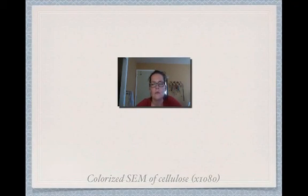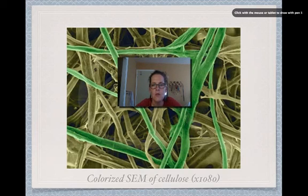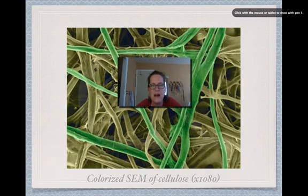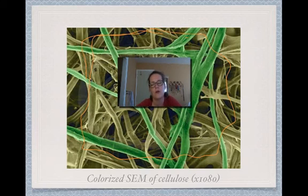This is a colorized SEM — a scanning electron micrograph. This is actually cellulose, pictured about a thousand times bigger than it actually is. You can see all the fibers. This is what cellulose looks like — all this fibrous connective tissue that creates a mesh framework around plants. Inside you have the cell, and outside you have all this fiber that helps give it structure.